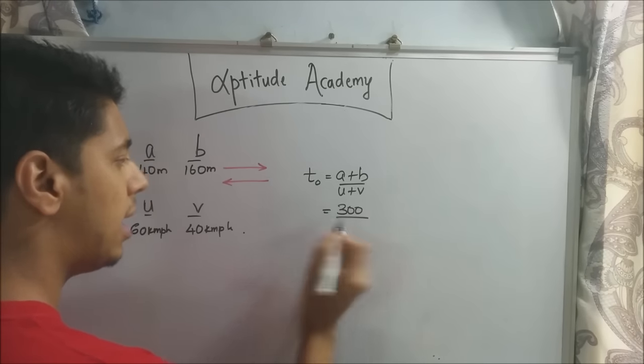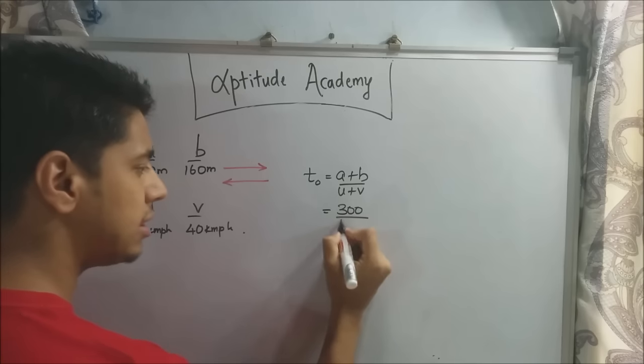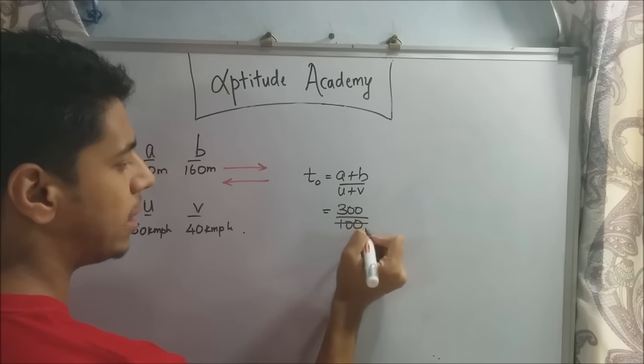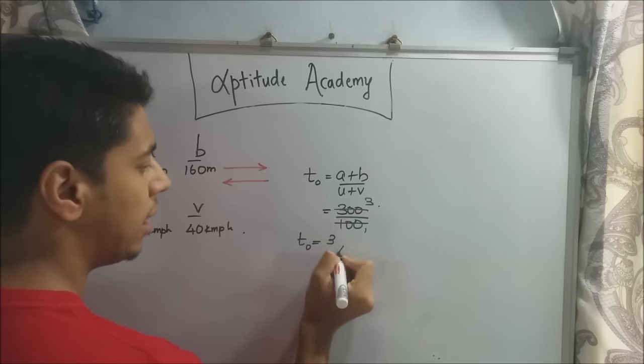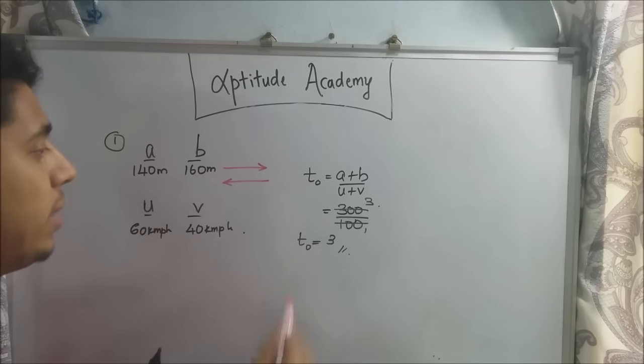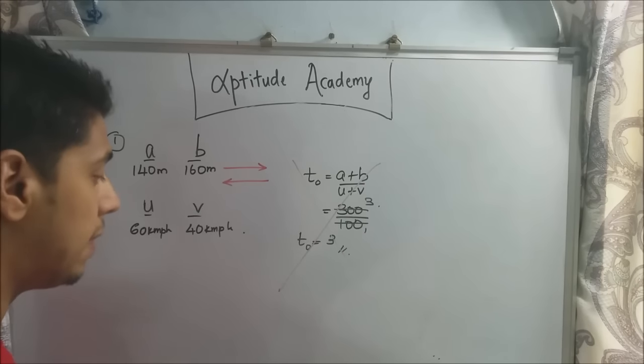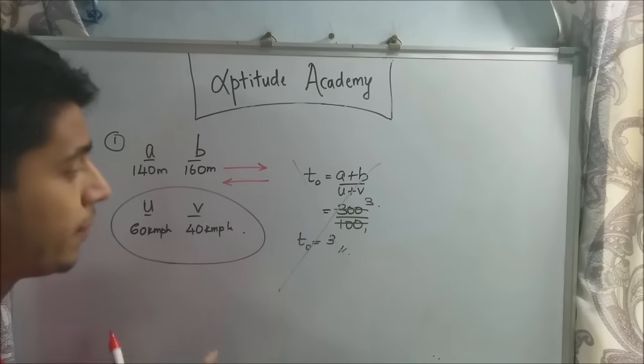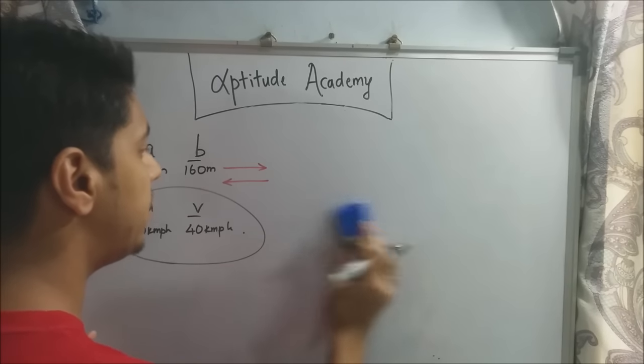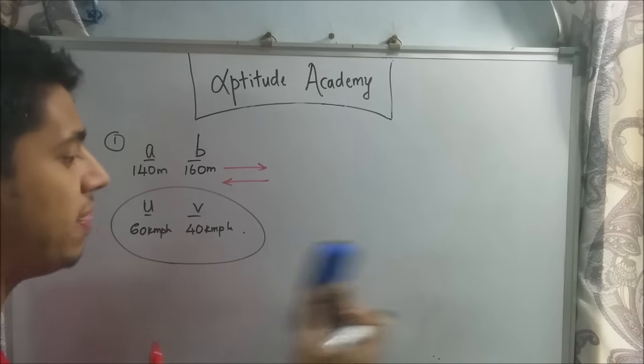Now we already know that the time required to cross in the opposite direction is a plus b divided by u plus v. It's plus because they are moving in the opposite direction. Now a plus b is 140 plus 160, that is 300. And u plus v is 60 plus 40 which is 100. So t₀ is equal to 3. Now if you write this answer, you will get it completely wrong. This is because you have not converted this into meters per second.